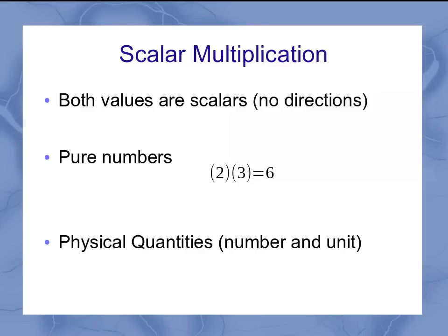But in physics, they can also be physical quantities, which are numbers in a unit. So, for example, the area is 3 meters times 2 meters, giving us 6 meters squared.